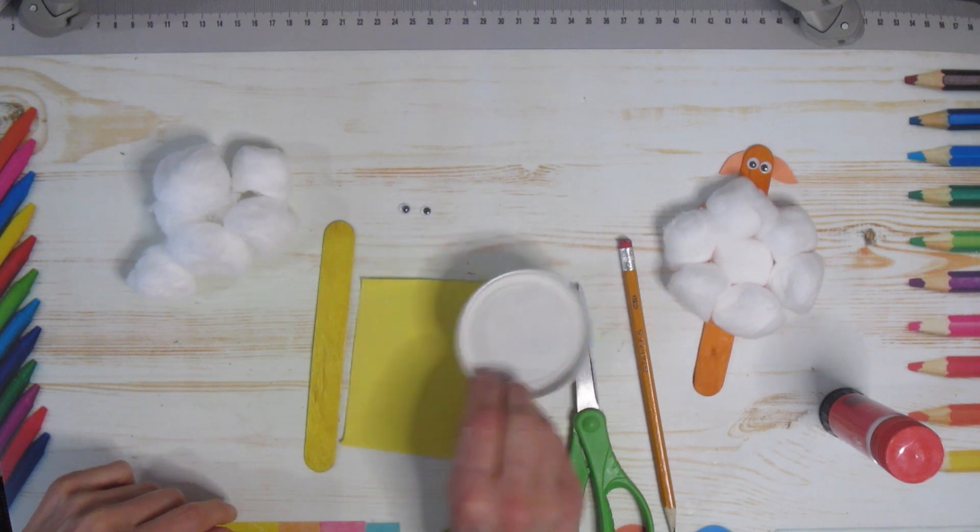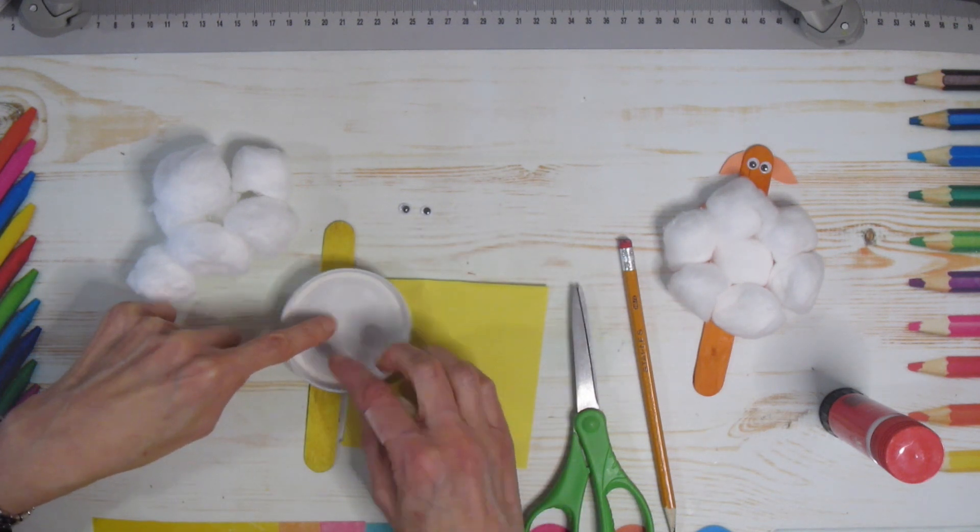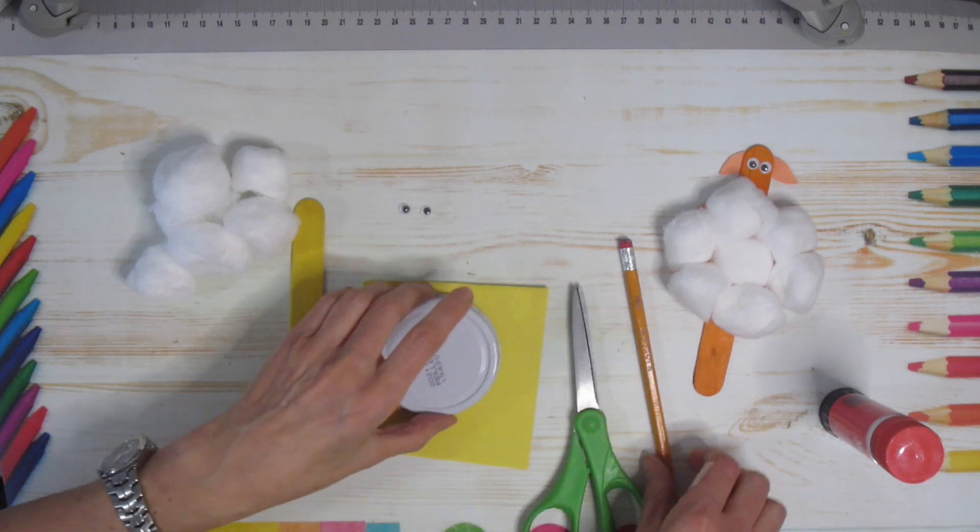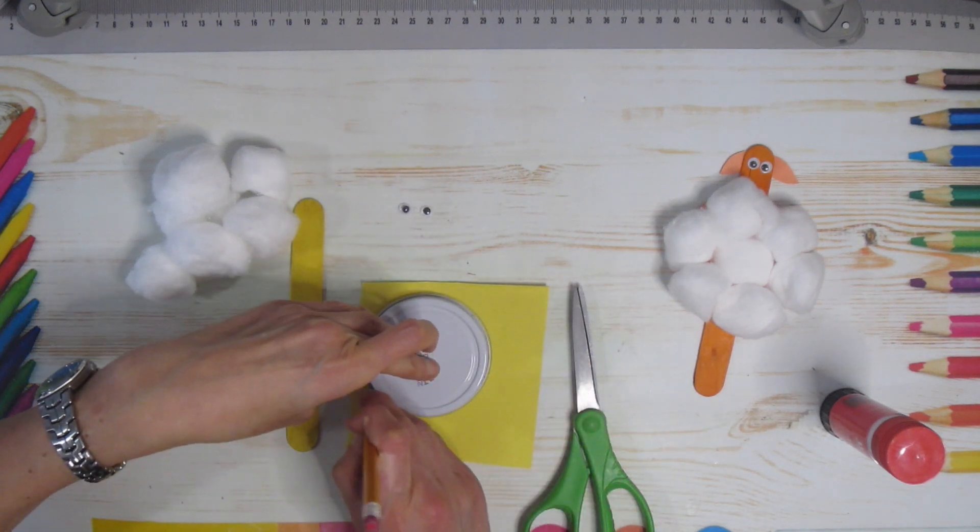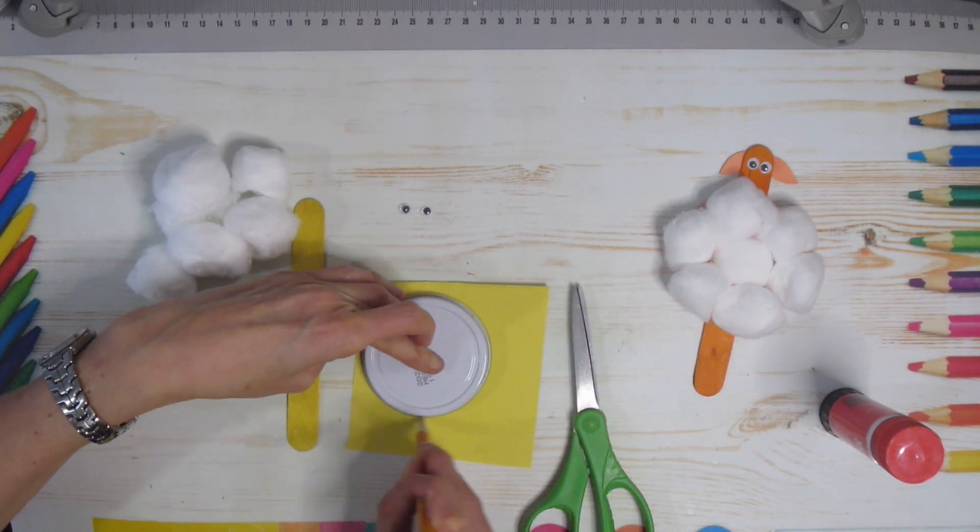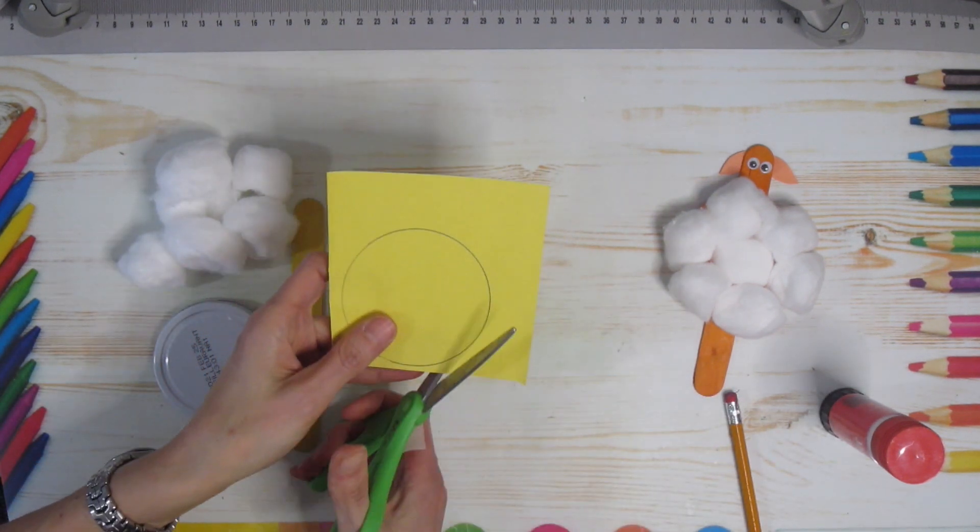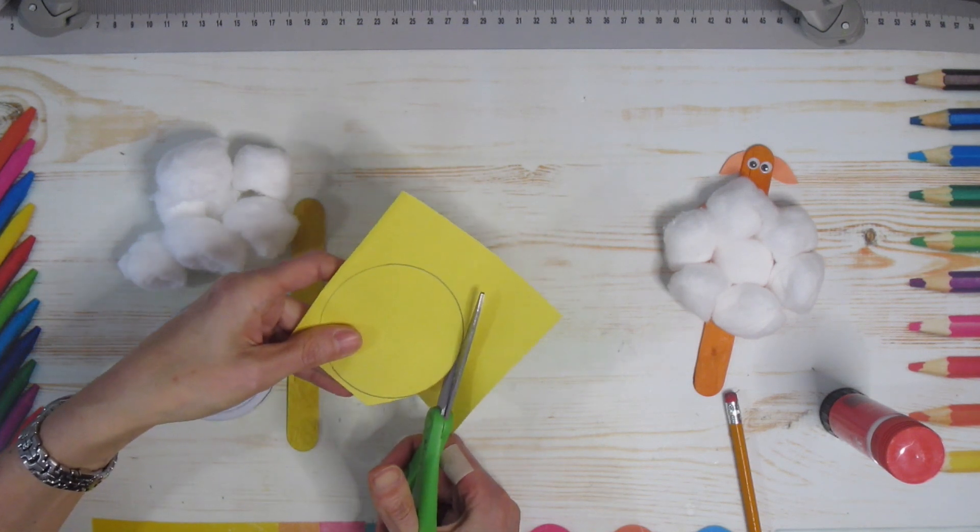So when I'm finding my circle tracer I want it to be able to go over top of my stick and not too large. So that's why I grabbed this one and all I'm gonna do is take my pencil and trace. If you don't have one that's okay, just draw a circle. It's not really going to matter because you're going to have the cotton balls on there, so if it's not a complete perfect circle it's not gonna matter. So draw your circle then you're gonna cut that out.